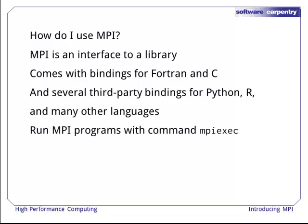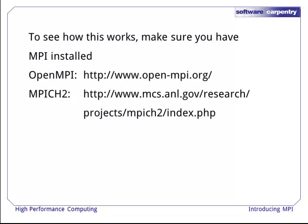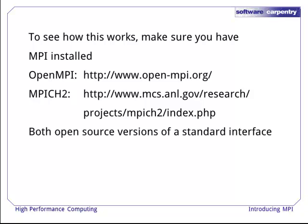The basic workflow for using MPI is to build your tool using the libraries and the appropriate bindings, and run the resulting program with a utility called mpiexec. Make sure you already have MPI installed. If you're using a computer system where other people routinely run multi-node jobs, it probably already is, but you can also run MPI programs on your desktop or laptop quite simply. There are two main MPI distributions at the moment: OpenMPI and MPICH2. Both are excellent open source implementations of the MPI standard interface, and there's a friendly rivalry between the two groups ensuring development proceeds quickly.